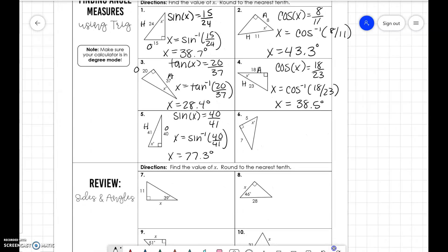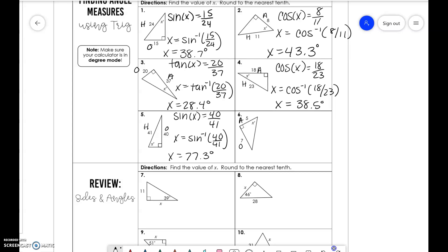And lastly we have opposite and adjacent. So tangent of x is equal to 7 over 5, and 54.5 degrees.